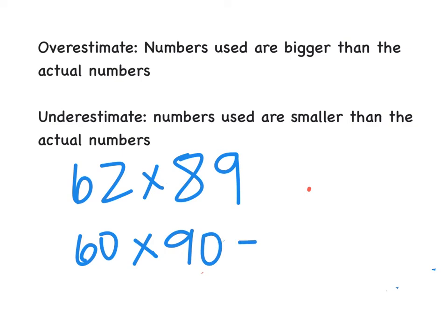So I would probably do 60 times 90. So then when I'm going back, 6 times 9 is 54, with two zeros at the end. So when I'm going back to see if it's an overestimate or an underestimate, to get from 62 to 60, I went down, and to get from 89 to 90, I went up.